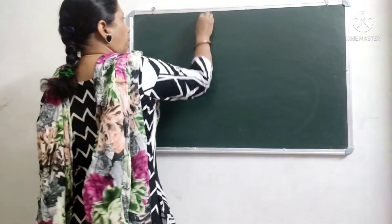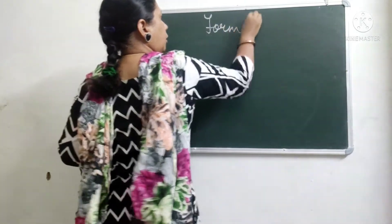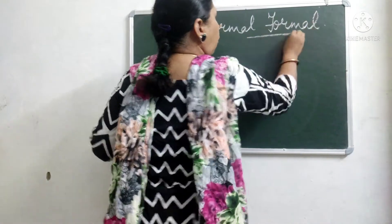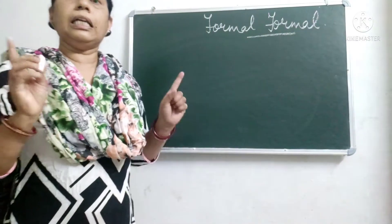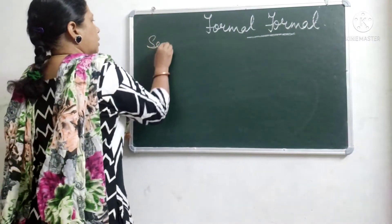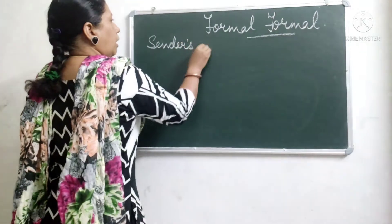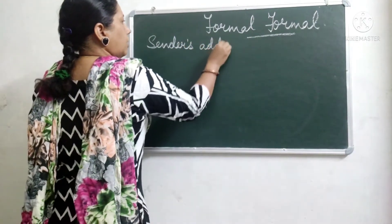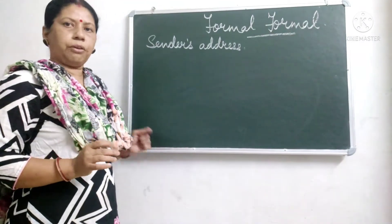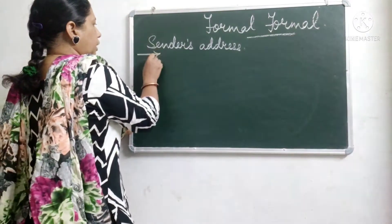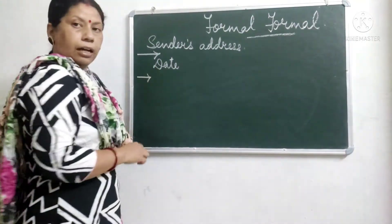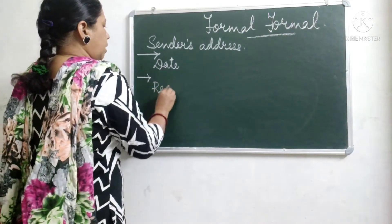So now the format of formal letter writing. First is the sender's address, which should be written in two or three lines. Then you have to leave a line and write the date. Then again leave a line, then write the receiver's address.